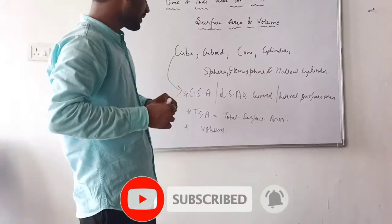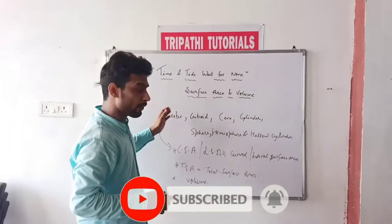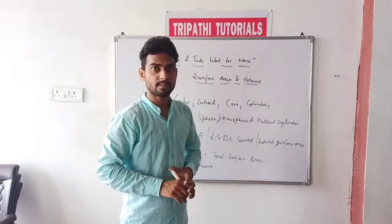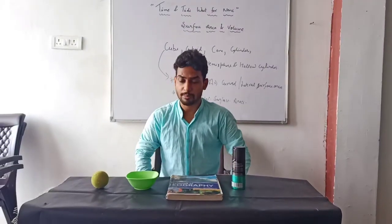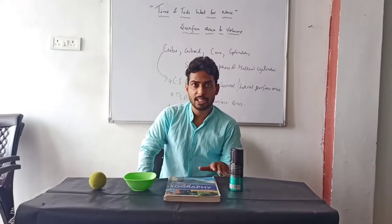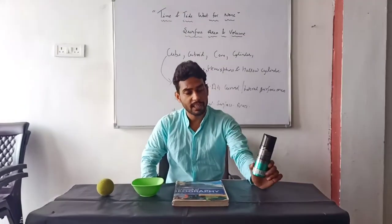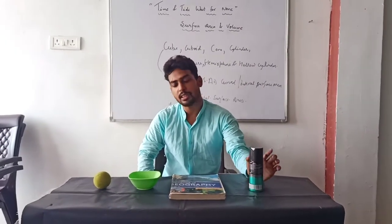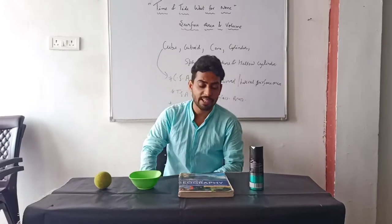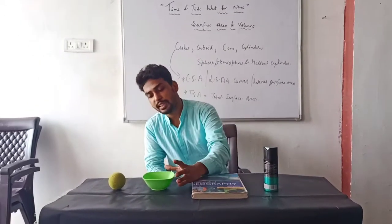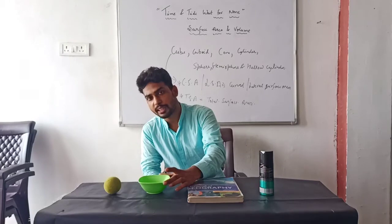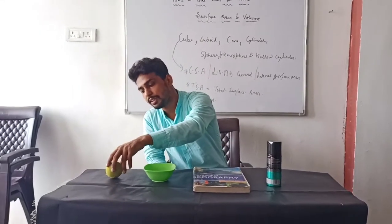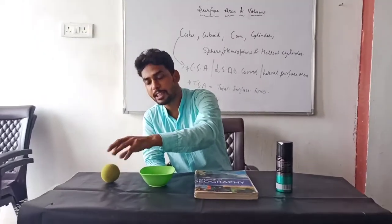Now I will give you some examples of how we will find CSA, Area, and Volume. Friends, I have kept some things on the table. This shape is a cylindrical shape. This is our book - the book is in a cuboid shape. And we have this at the head - it is a hemisphere shape. And this is our ball - it is a sphere shape.